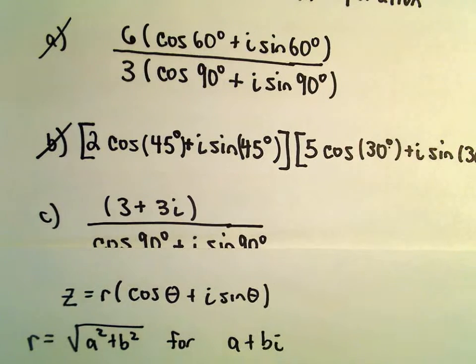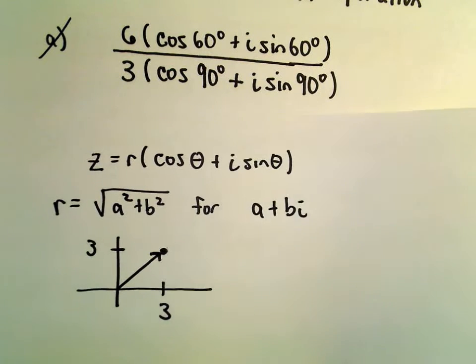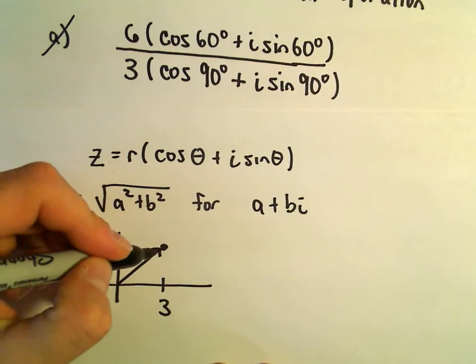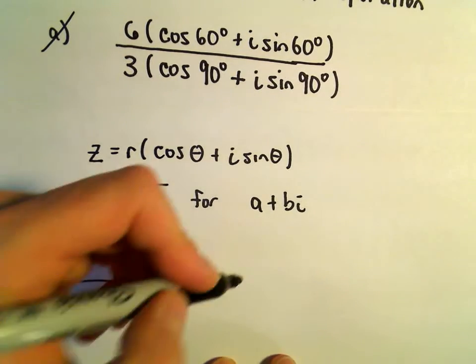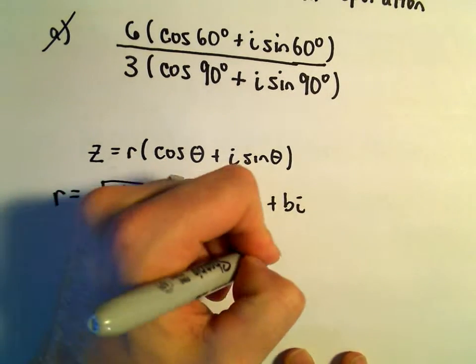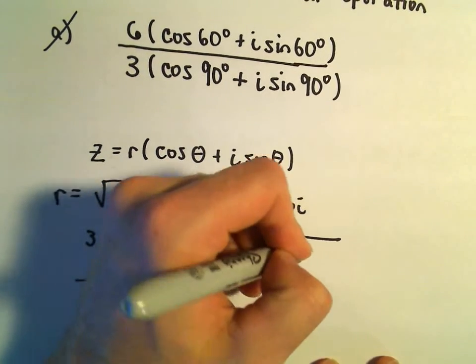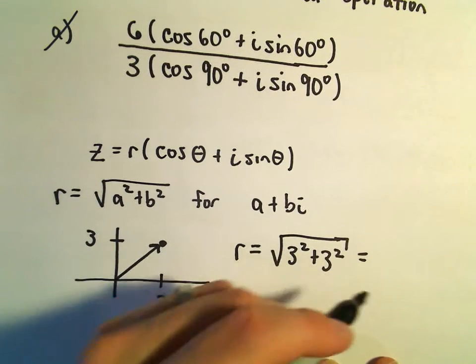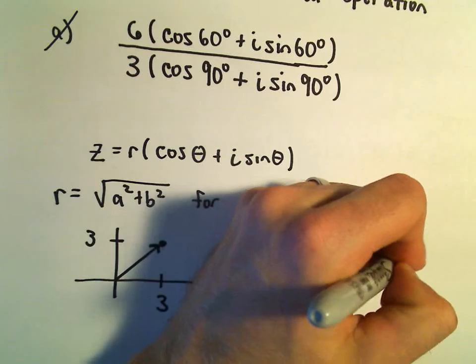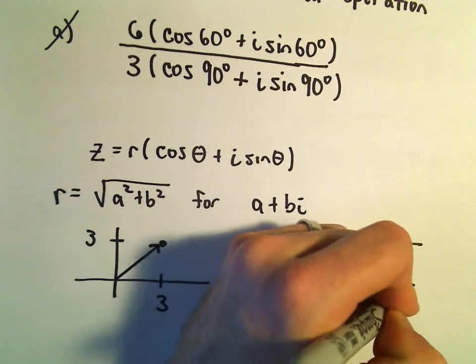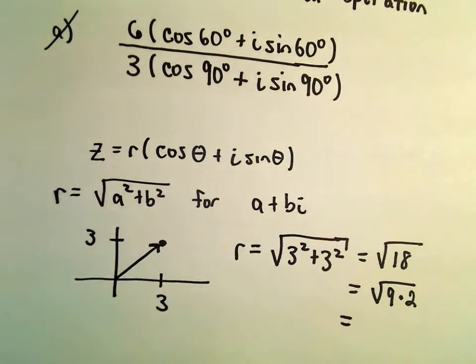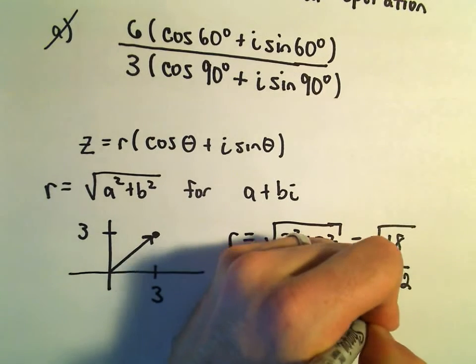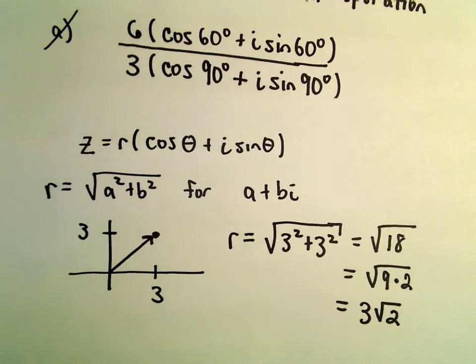So for 3 plus 3i, I went ahead and graphed that real quick. So there's our 3 plus 3i. Well, to get our r value, we would simply take 3 squared plus 3 squared - well that's going to be 9 plus 9, or 18. We can always write 18 as 9 times 2. We can pull the square root of 9 out as a 3. So we would be left with 3 root 2 for our value for r.